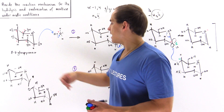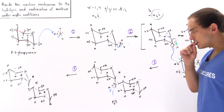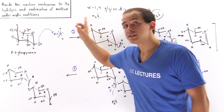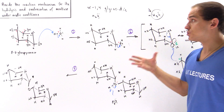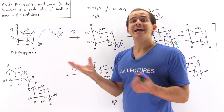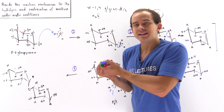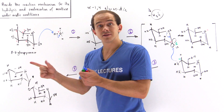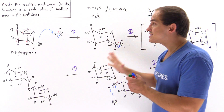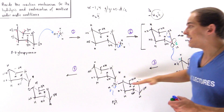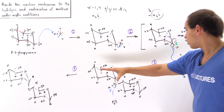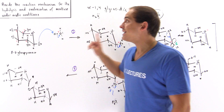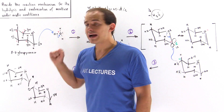This is the maltose molecule. Steps one through four together constitute the condensation reaction, and this mechanism is true for combining any two sugar molecules to form a disaccharide. The hydrolysis is the same reaction but going in reverse: following step four, three, two, and one backwards gives the mechanism for hydrolysis.